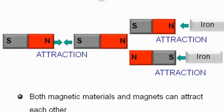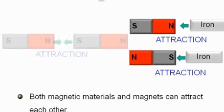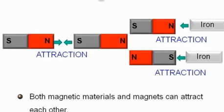Magnetic materials such as iron, nickel, etc. get attracted towards both the poles of a magnet, while two magnets get attracted towards each other when their unlike poles are brought closer.